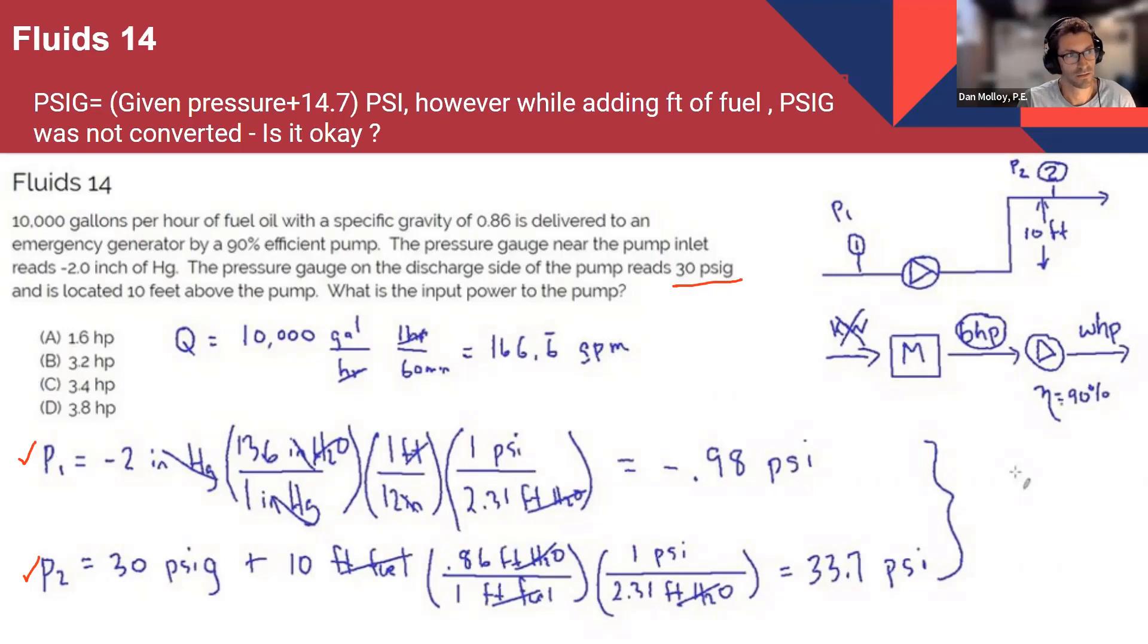Right. So if any of the pressure is open to the ATM, the atmospheric pressure, so it should be considered that there is a pressure difference of 14.7. That's how I understood it, right?